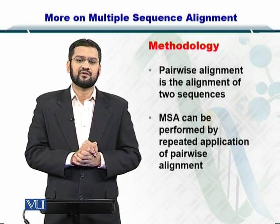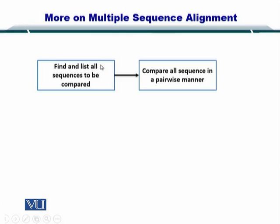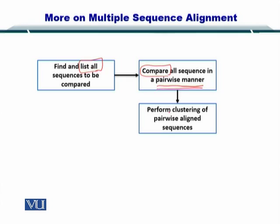Let's take a look at the process in detail in a step-by-step manner. First of all, you find and list all the sequences to be compared, and this can be done by simply finding their ID. Next, you compare the sequences you already listed and build pairwise alignments. Once you have performed pairwise alignments, you move towards clustering. Clustering is essentially a strategy to make pairs of most similar sequences — that is, you form pairs of sequences that are most similar to each other.